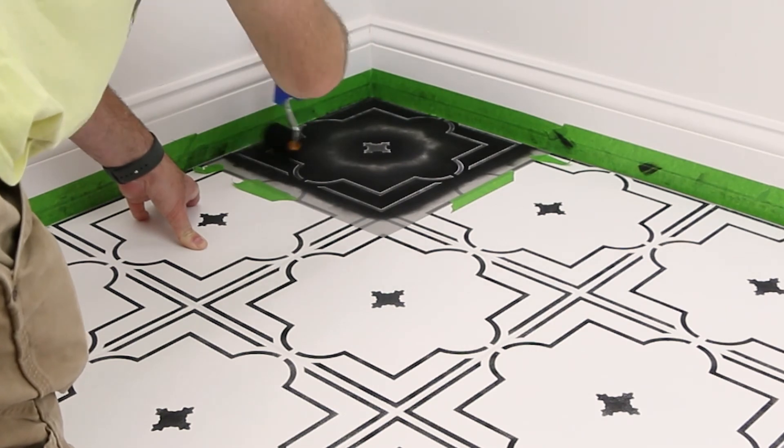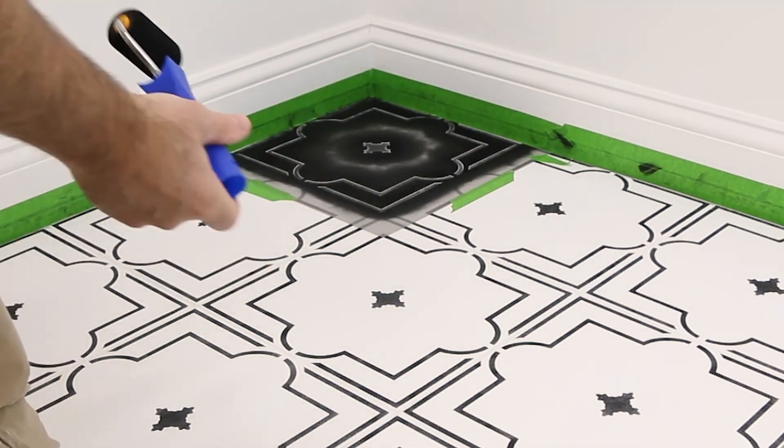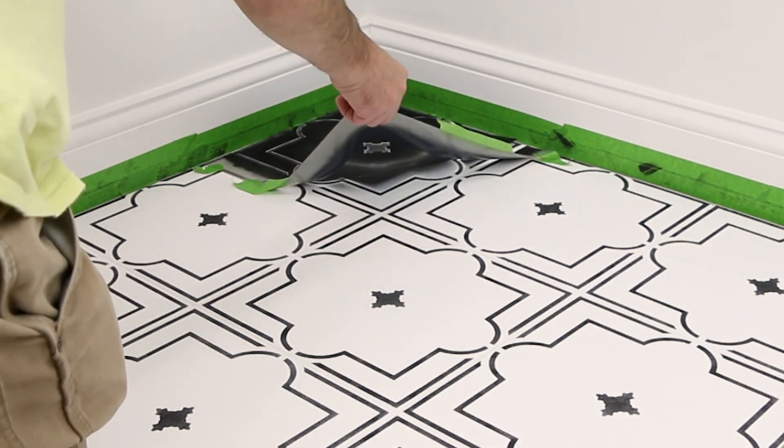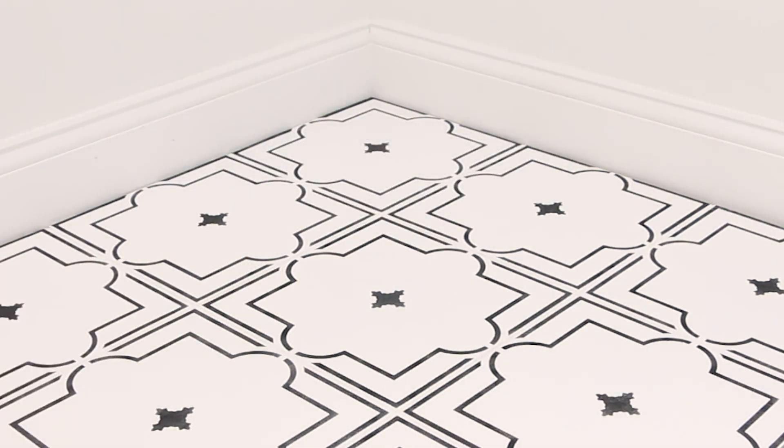Once finished, lift the stencil and peel away the masking tape to reveal your stylish new Moroccan tin tile floor. If desired, add a few coats of Americana acrylic sealer to protect your new floor from wear and tear.